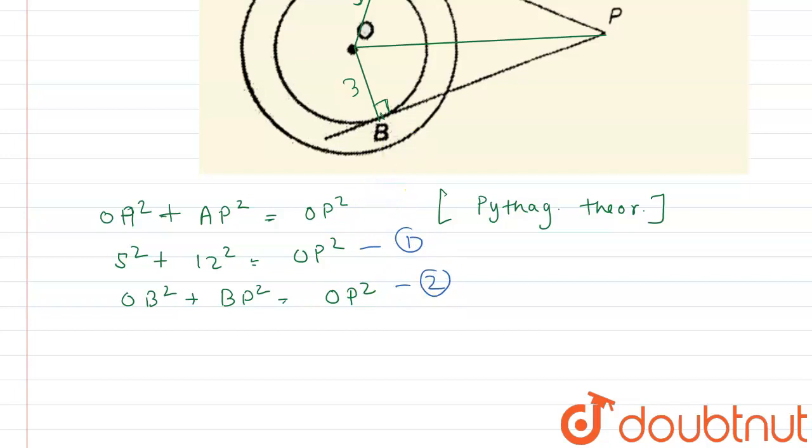So now when we compare first and second we see that RHS are equal, then we say that LHS are also equal. So here we get 25 plus 144 equals OB square. OB is 3, so 3 squared is 9, so we get 9 plus BP square.